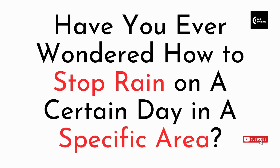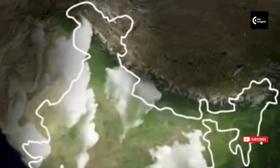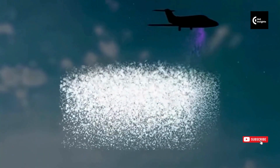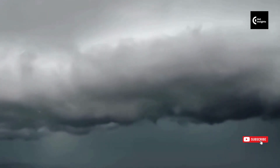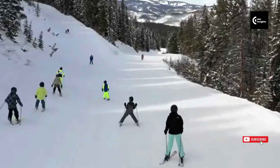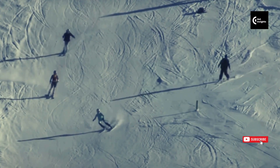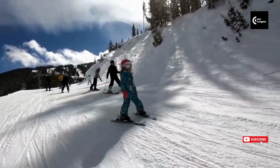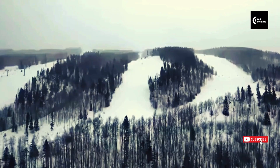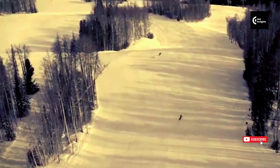Have you ever wondered how to stop rain on a certain day in a specific area? It turns out you can with a bit of planning. A few days before the big day, you start cloud seeding in the surrounding area, encouraging the clouds to rain earlier than planned. By the time your special day arrives, the clouds are all rained out, leaving you with clear skies. Many ski resorts in the USA also use cloud seeding to ensure sufficient snowfall, since if there is no snow, the resort will shut down.